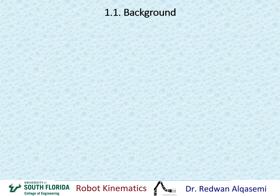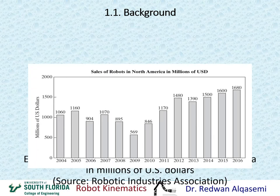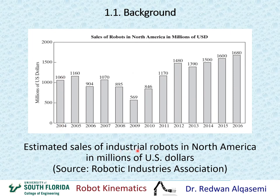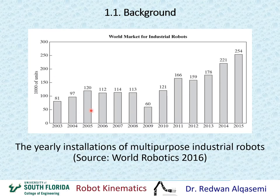I'm going to go through some charts showing some history of robotics and use in North America. This chart shows the estimated sales of industrial robots in North America in millions of dollars. There's a trend of increasing use of robots starting from the economic depression back in the 2008-2009 time period. We can also see a similar trend for yearly installations of multi-purpose industrial robots, showing that interest in robots is increasing every year.